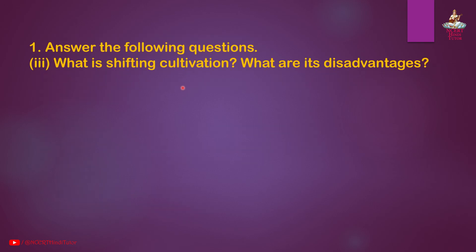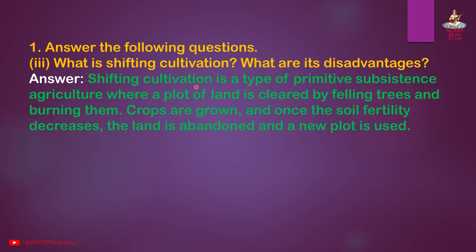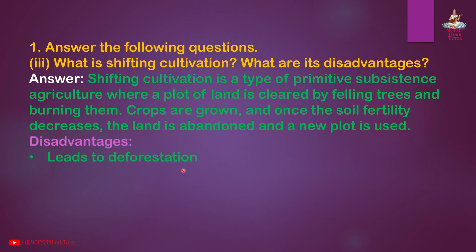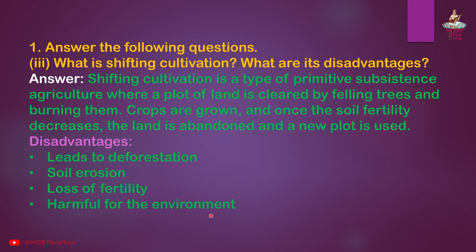Question 3: What is shifting cultivation? What are its disadvantages? Answer: Shifting cultivation is a type of primitive subsistence agriculture where a plot of land is cleared by felling trees and burning them. Crops are grown and once the soil fertility decreases, the land is abandoned and a new plot is used. Disadvantages: leads to deforestation, soil erosion, loss of fertility, and is harmful for the environment.